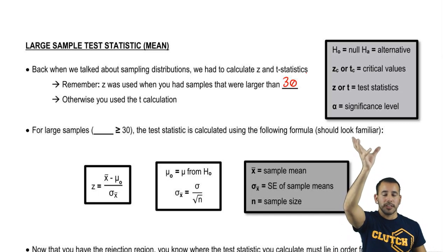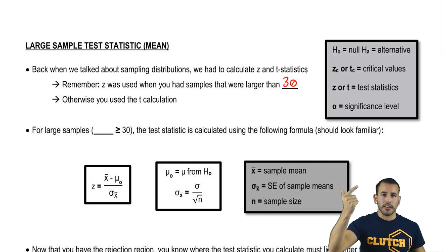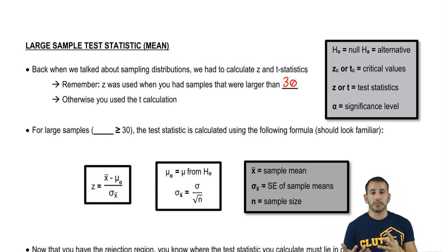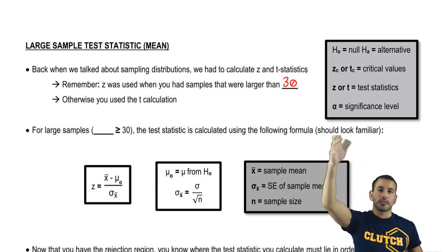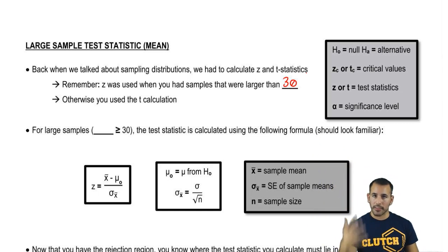So right up here I have kind of a breakdown of other things that we've seen across other videos. We have the null and alternative hypotheses H0 and Ha. We have the zc and tc which I call them the critical values. Z or t without the little c, I'm going to refer to those as our test statistics. And then alpha is going to be our significance level.